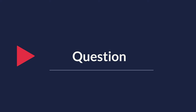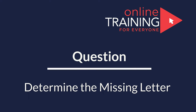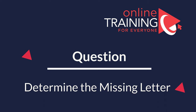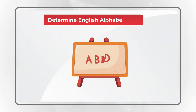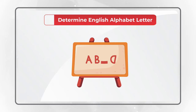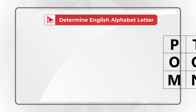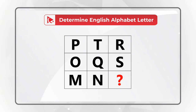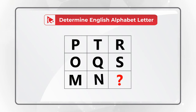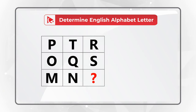Here's one of my favorite questions to test your verbal reasoning as well as your knowledge of the English alphabet. You need to determine the missing letter of the English alphabet to replace the question mark. You're presented with a 3x3 matrix, and this matrix has letters P, T, R, O, Q, S, M, N, and then the missing letter, which you need to select from one of four possible choices.